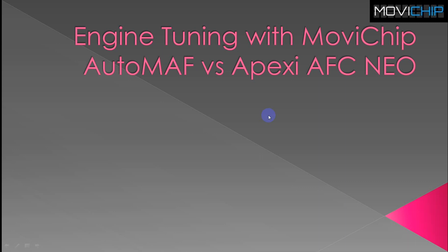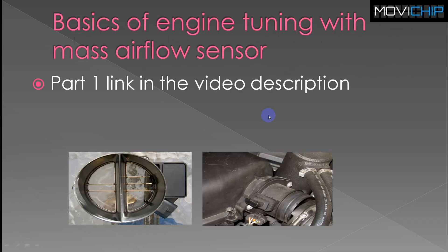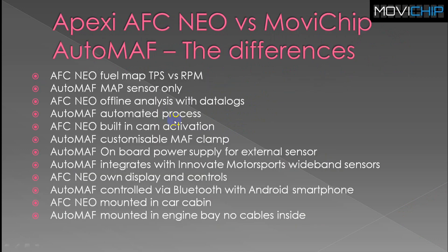Hey guys, this is part two of engine tuning with mass airflow sensor. Part one is linked in the video description. In this video we're looking at comparing two dedicated products: the Mobile Chip Auto Math versus the ASC Neo. These products are specifically designed to manipulate the mass airflow signal to the engine to alter the fueling. The AFC Neo versus the Auto Math - what are the key differences between these two dedicated products?